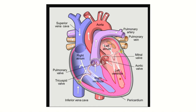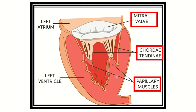There is one papillary muscle anteriorly and another posteriorly. Here we can see the anterior cusp and the posterior cusp. The mitral valve cusps attach to the chordae tendineae, which in turn attach to the papillary muscles, and finally to the ventricular wall.